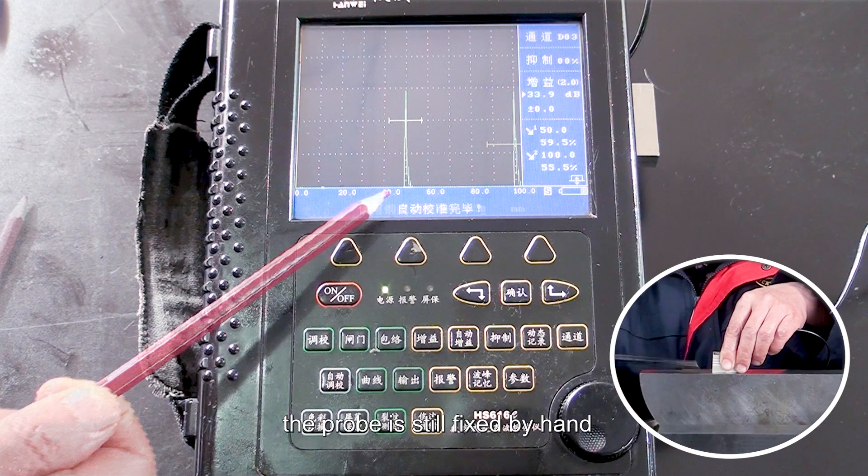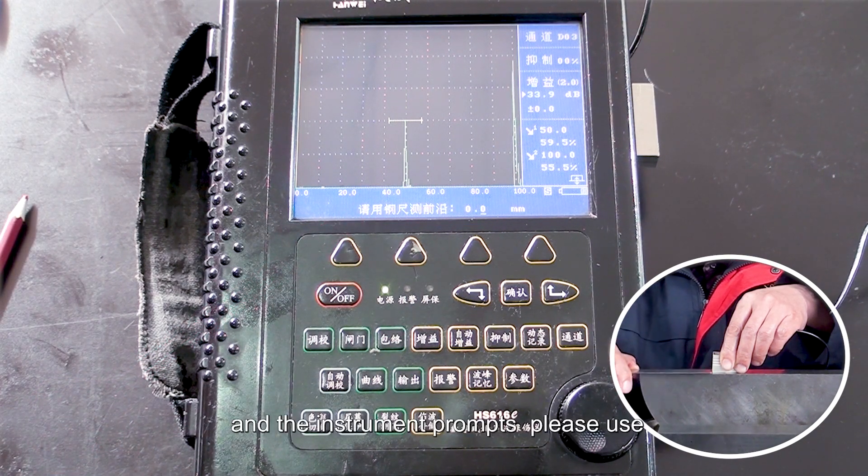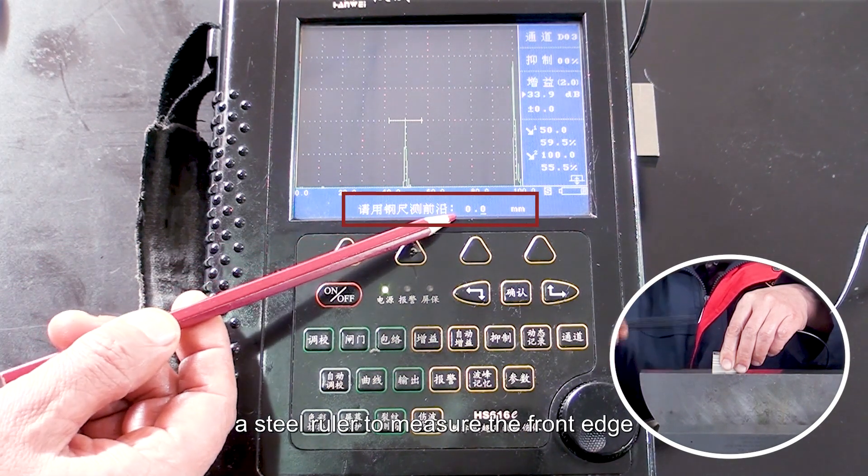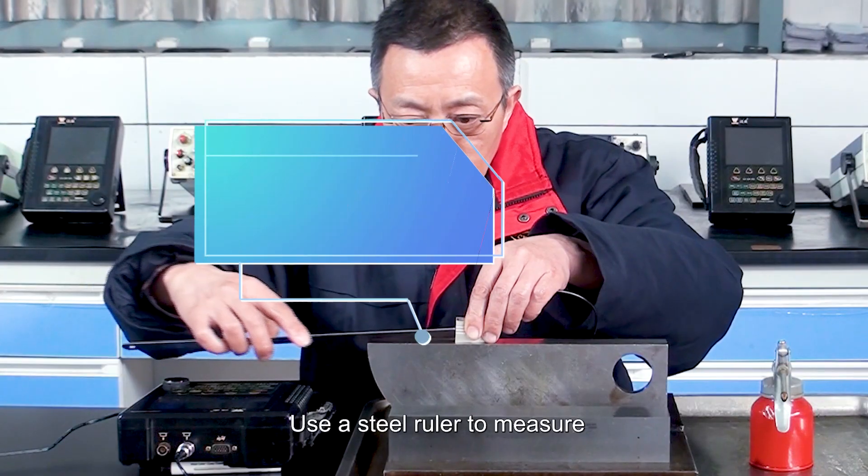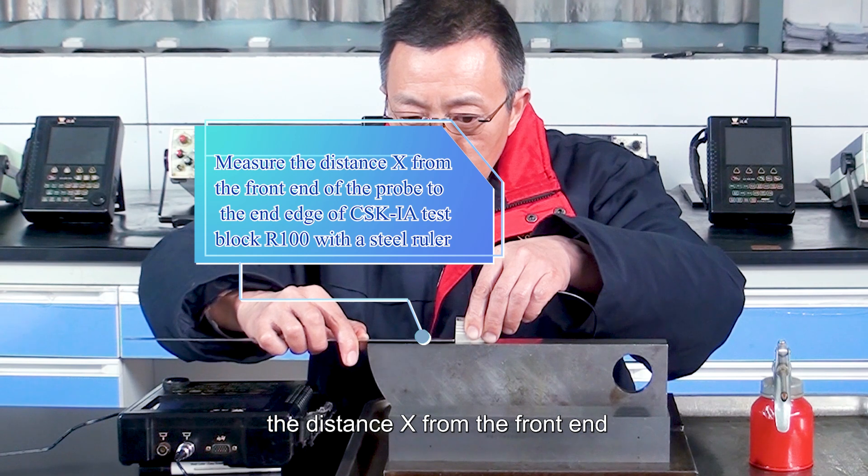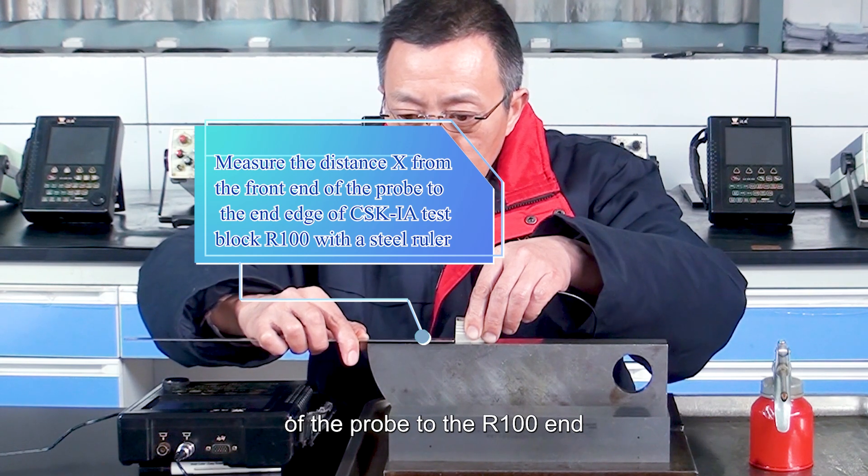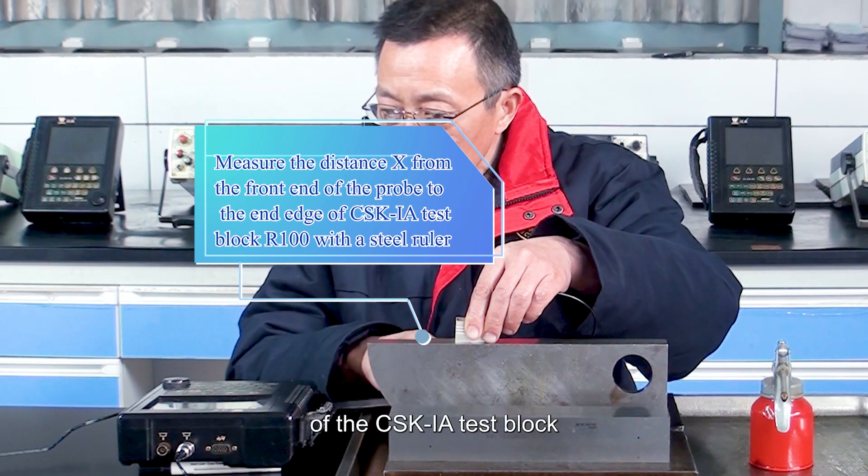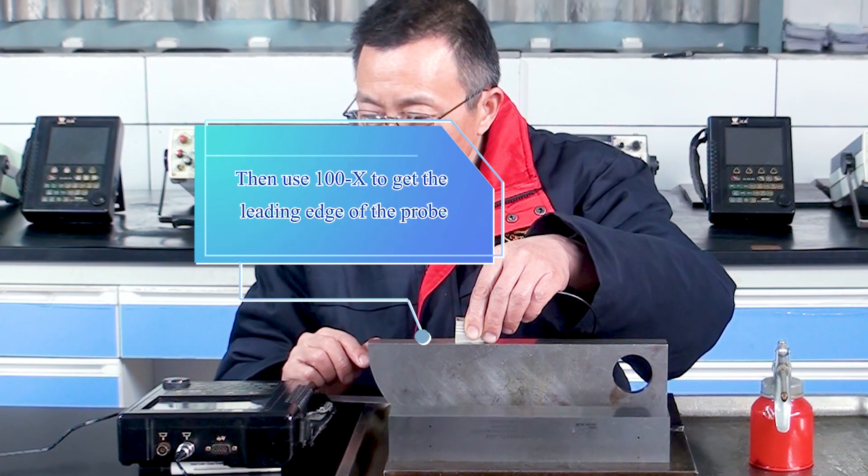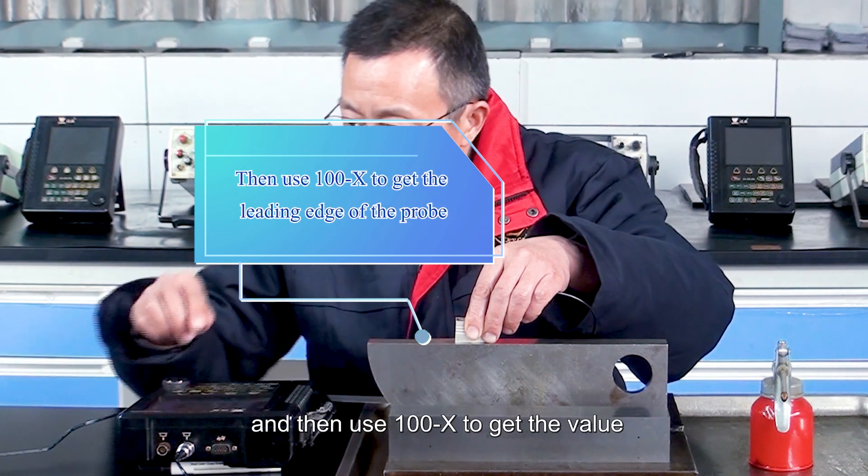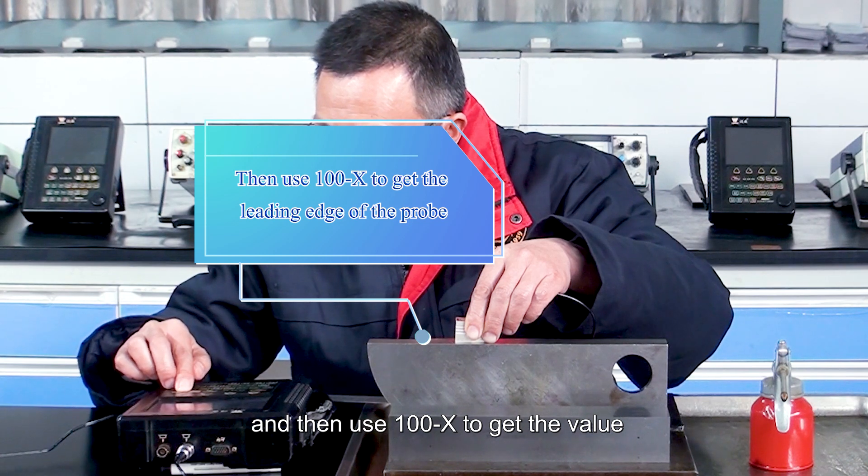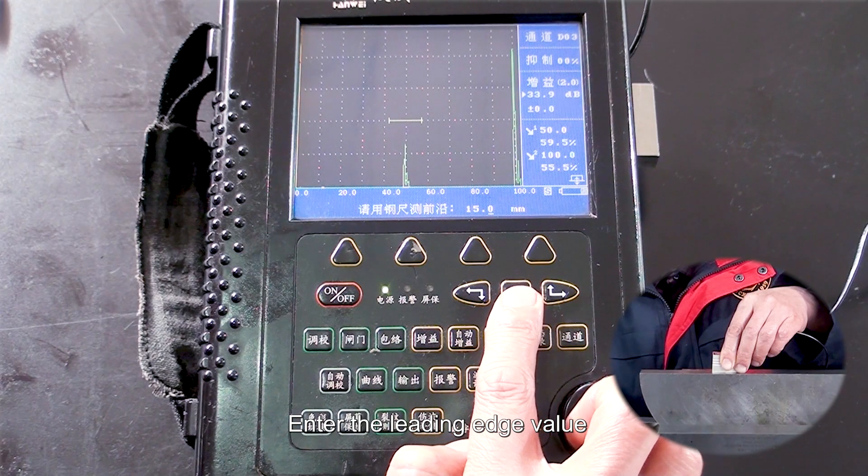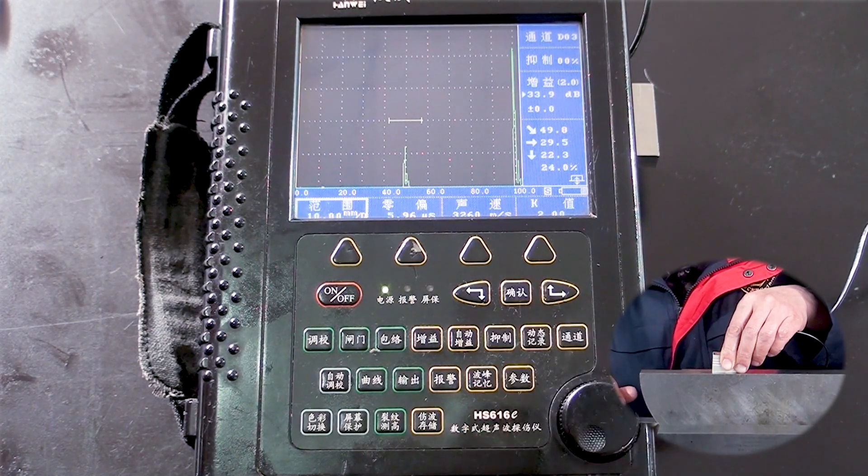After that, the probe is still fixed by hand, and the instrument prompts, please use a steel ruler to measure the front edge. Use a steel ruler to measure the distance x from the front end of the probe to the R100 end of the CSK-IA test block. And then use 100-X to get the value of the front edge of the probe, enter the leading edge value, and press the OK key.